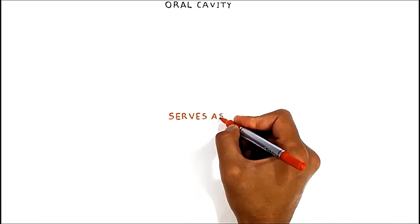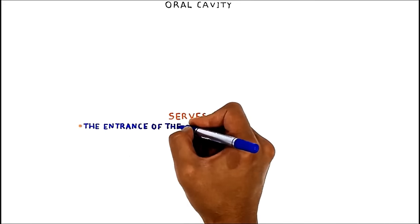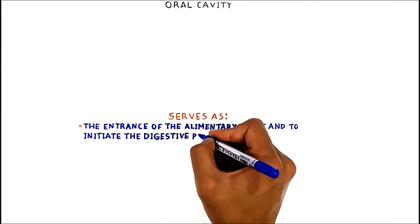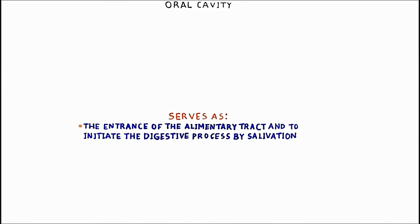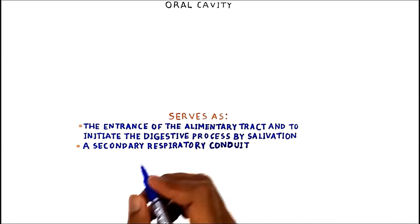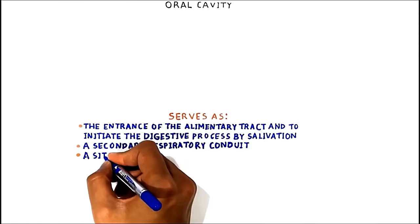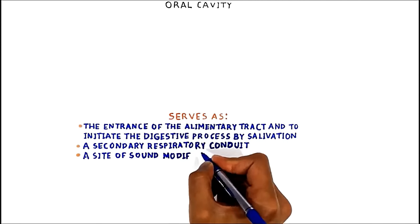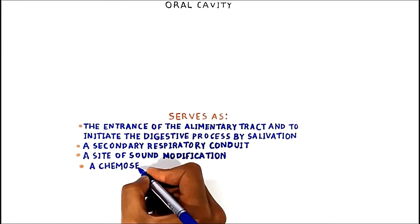The primary function of the mouth is to serve as the entrance of the alimentary tract and to initiate the digestive process by salivation and propulsion of the alimentary bolus into the pharynx. It also serves as a secondary respiratory conduit, a site of sound modification for the production of speech, and a chemosensory organ.